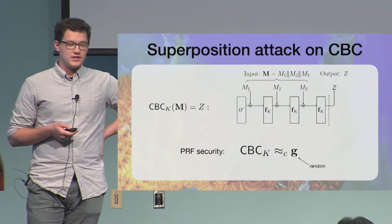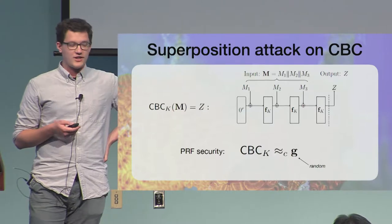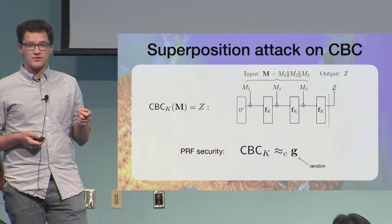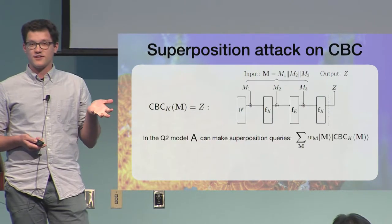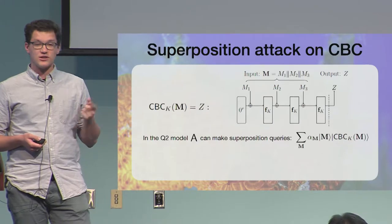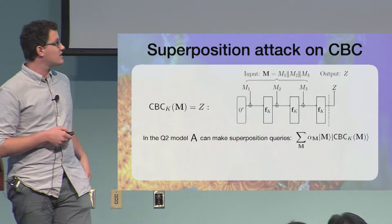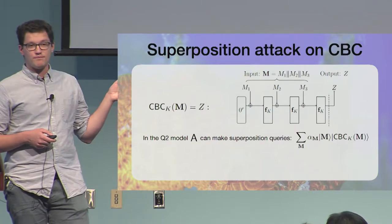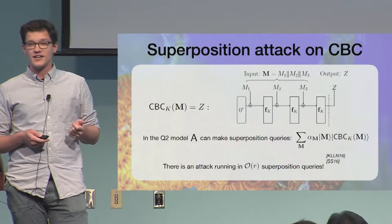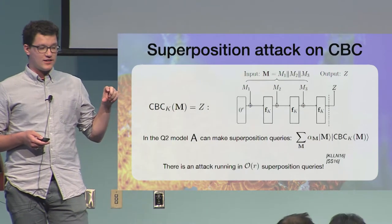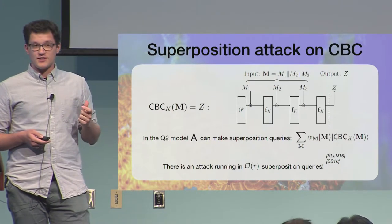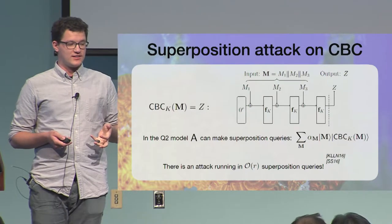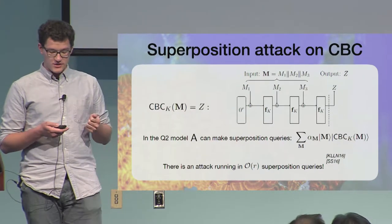And the security notion that we aim at here is the PRF security. So we want for a random key for the construction to be indistinguishable, computationally indistinguishable from a random function, in the model where we give the adversary again superposition access to the whole thing. As you have seen in the previous talks, the adversary can prepare a superposition of messages and the second register she gets the outputs of the function. And there is an attack running in linear time in the number of bits of the internal state that breaks the construction. Namely, the adversary can find a collision that allows her to easily distinguish from a random function. Okay?